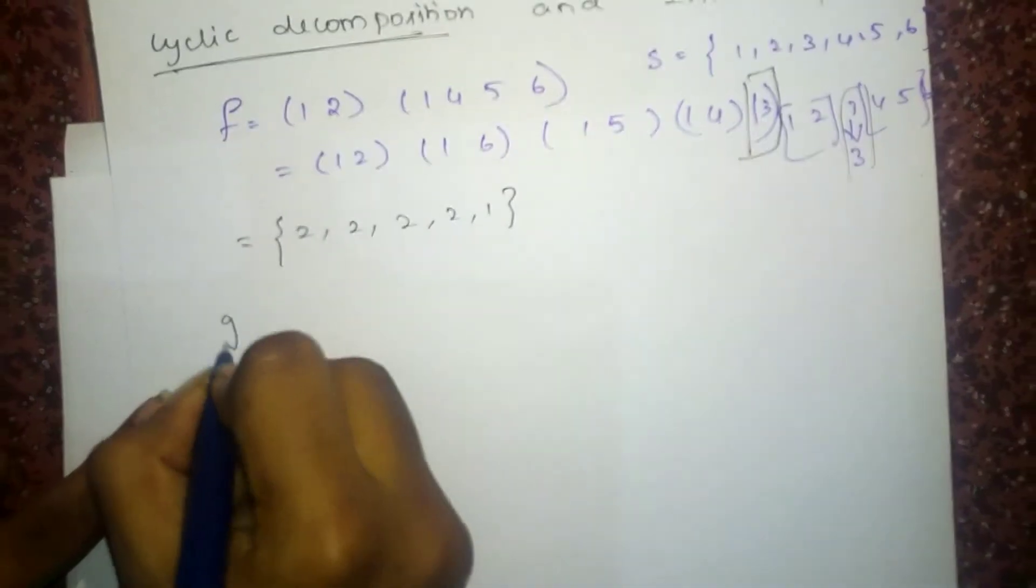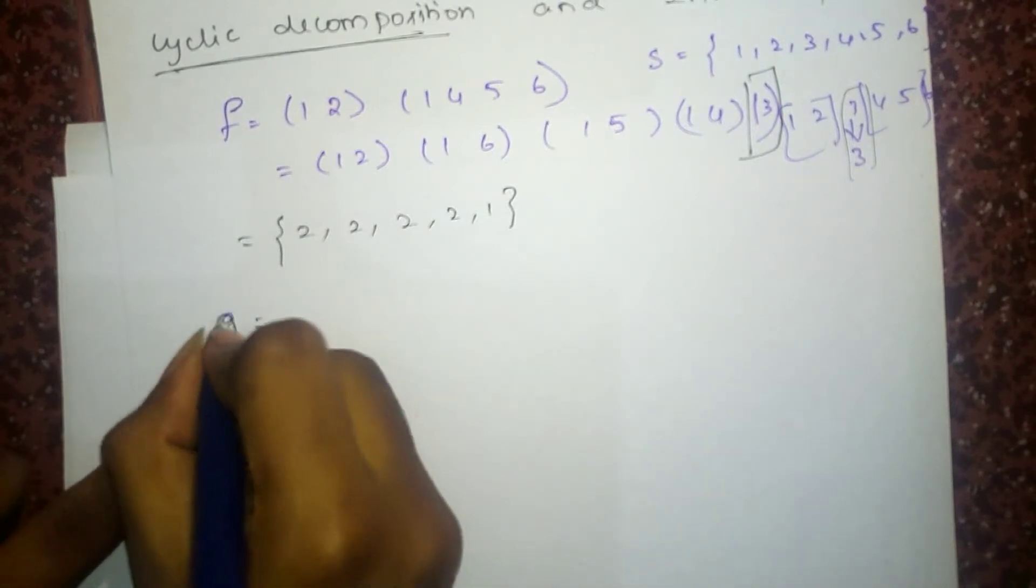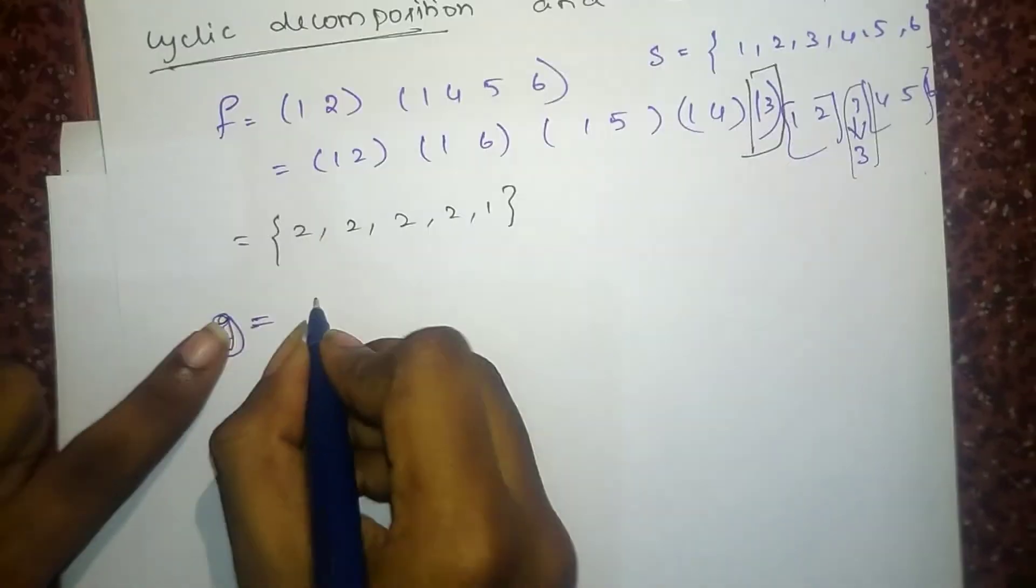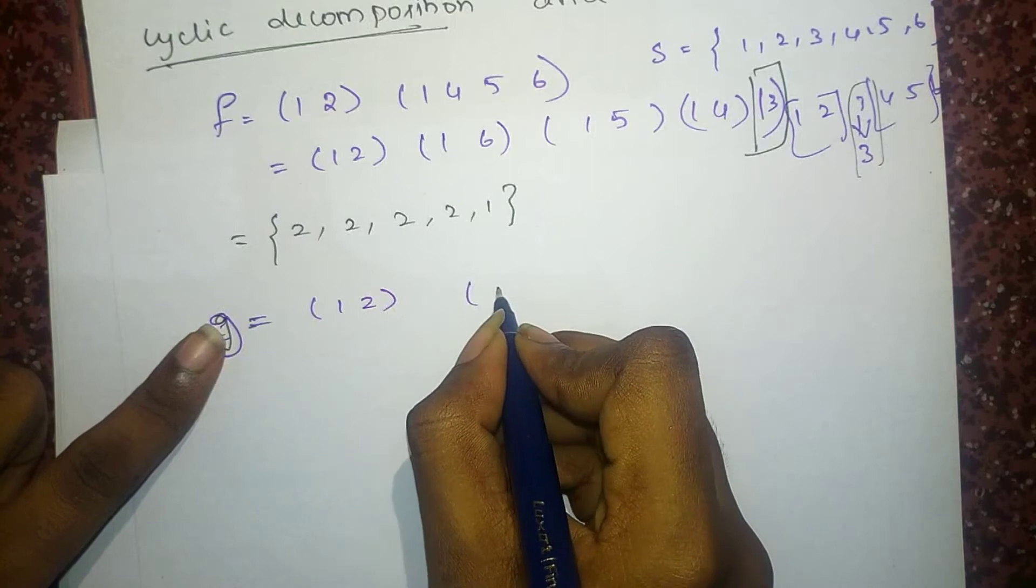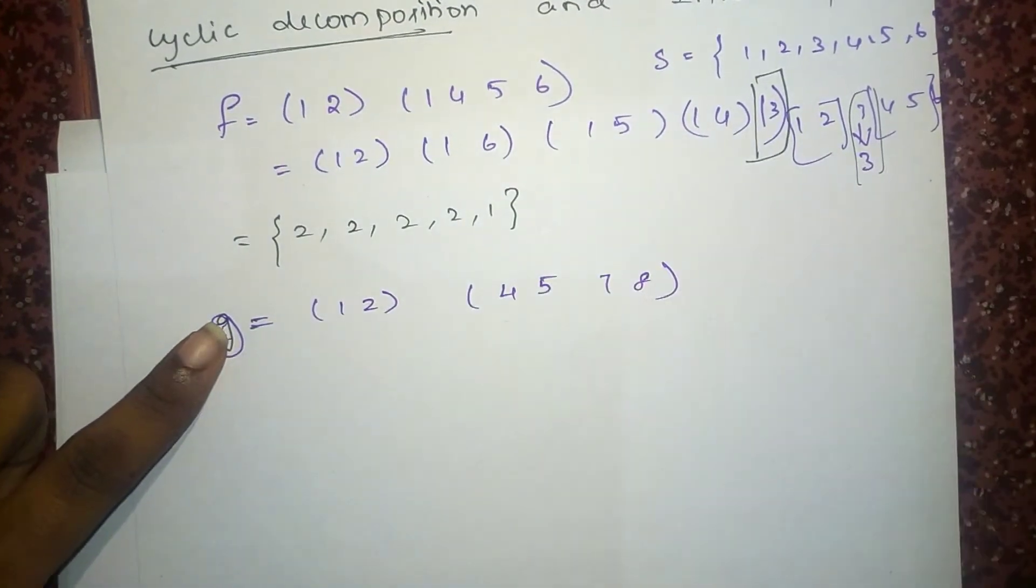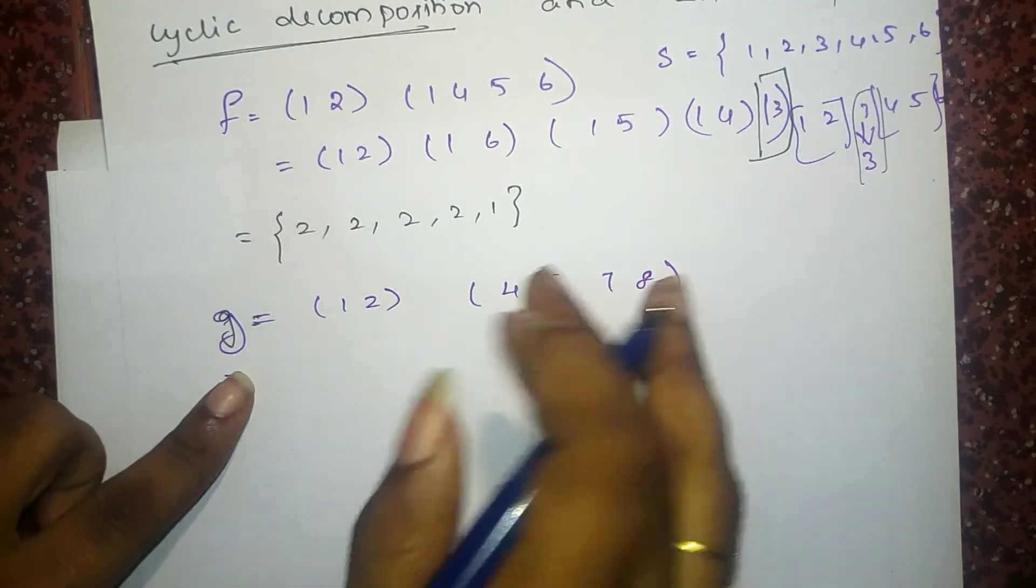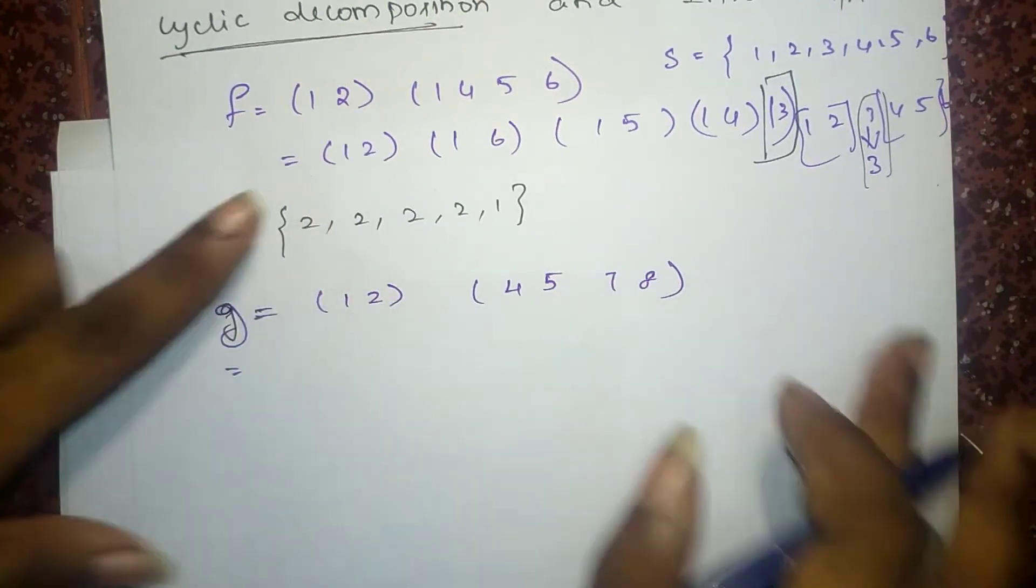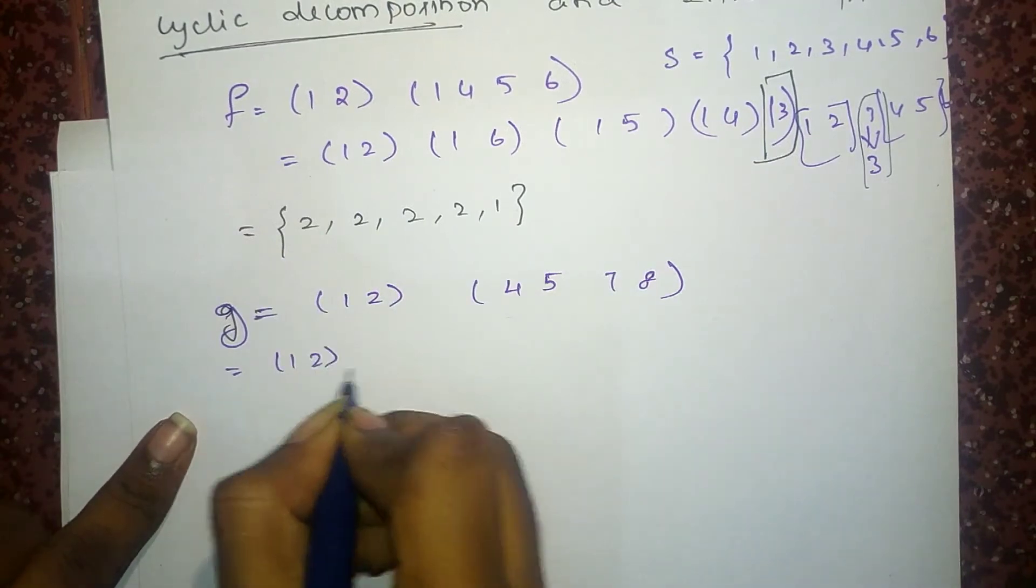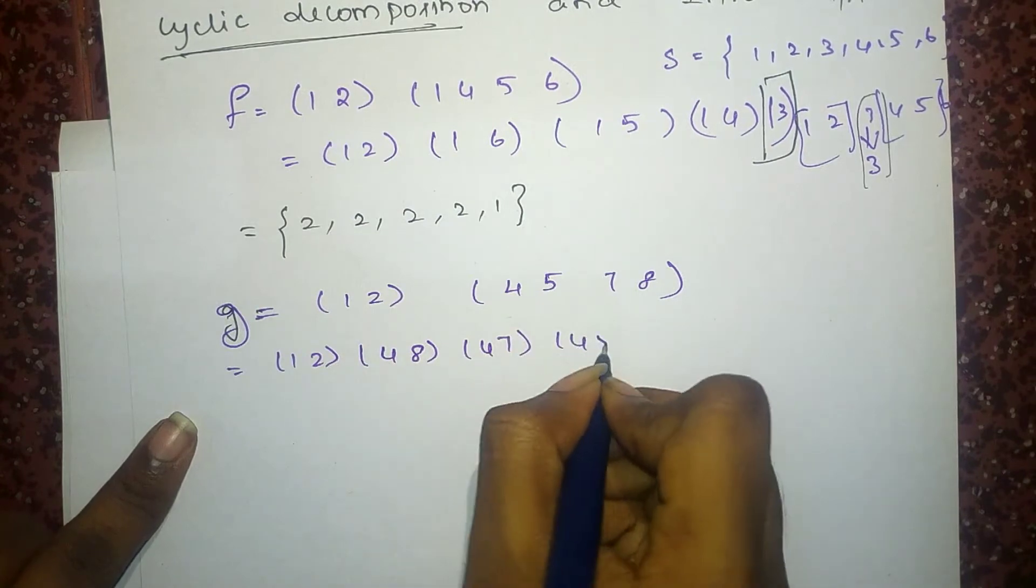I write one more. G, S, 1, 2, 4, 5, 7, 8. So I am going to separate this into transposition. I think I have so many gaps here, just don't mind it. 1, 2, 4, 8, 4, 7, 4, 5.